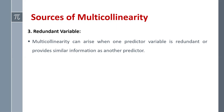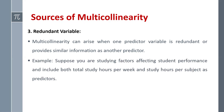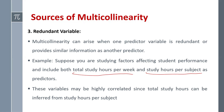The third source is a redundant variable. Multi-collinearity can arise when one predictor variable is redundant or provides similar information as another predictor. For example, if we are studying factors affecting student performance and include both total study hours per week and study hours per subject, these variables may be highly correlated since total study hours can be inferred from study hours per subject. Two variables giving similar information causes multi-collinearity.